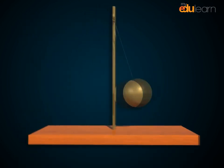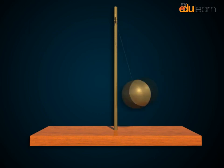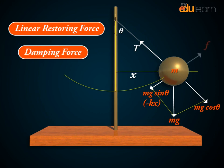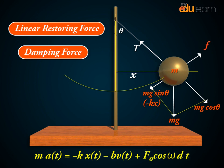The motion of a particle under the combined action of a linear restoring force, damping force, and a time-dependent driving force is given by M A of t equals minus K X of t minus B V of t plus F not cos omega d t.